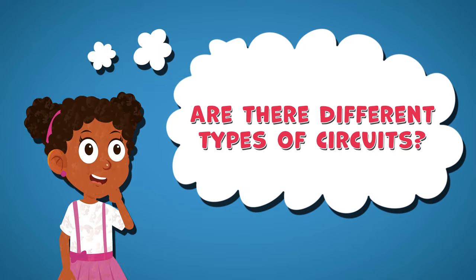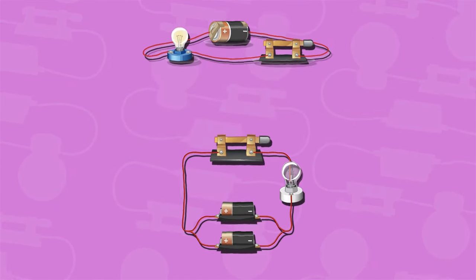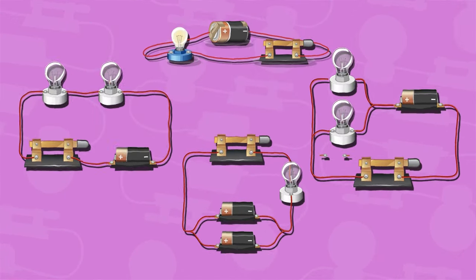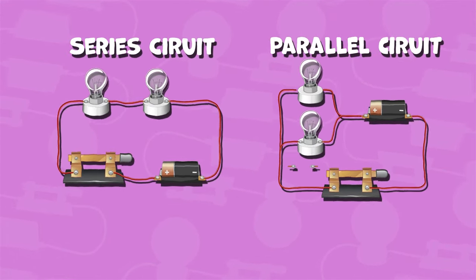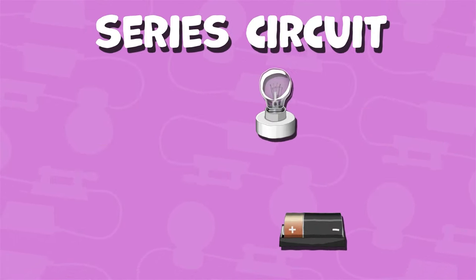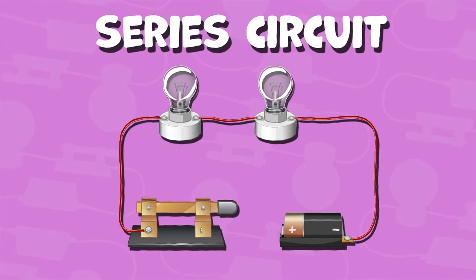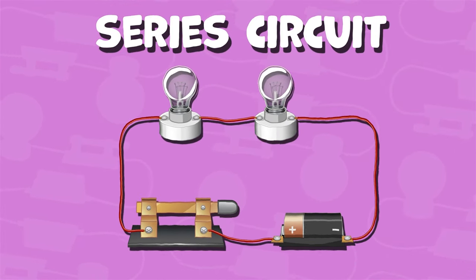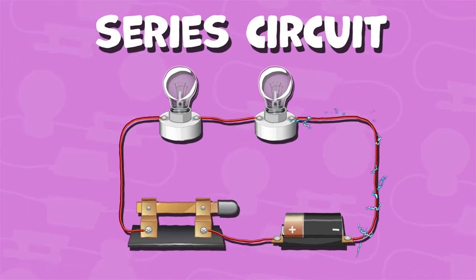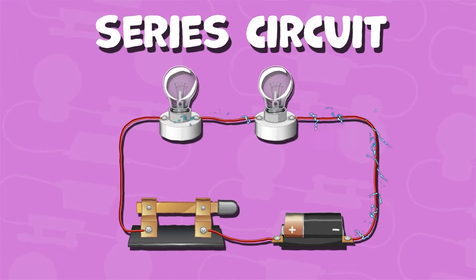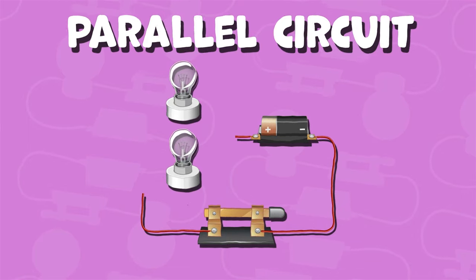There are different types of circuits, such as series circuits and parallel circuits. Series circuits have components connected in a line, so the electricity flows through one component and then to the next. Parallel circuits have components connected in parallel, so the electricity flows through multiple paths at the same time.